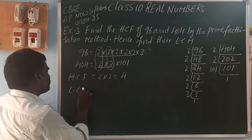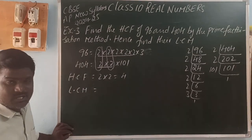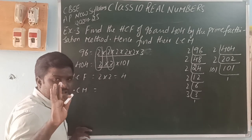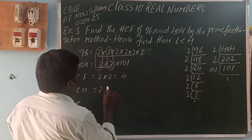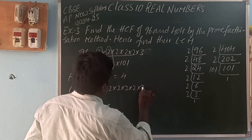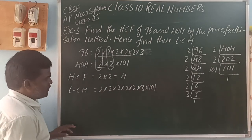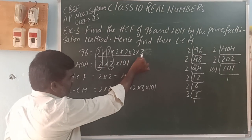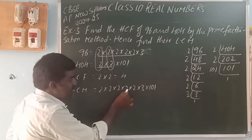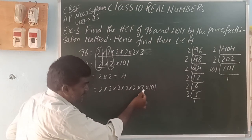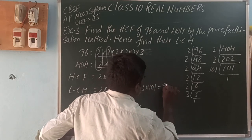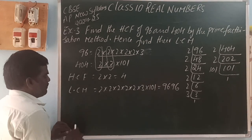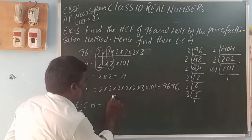For LCM, take the highest multiple of all prime factors. The prime factors are 2, 3, and 1 (i.e., from 404). Factor 2 appears 5 times at maximum, factor 3 appears once. So LCM = 2^5 into 3 into 1 = 32 into 3 = 96. There is another formula: Product of two numbers = HCF × LCM. So LCM = (96 into 404) ÷ 4 = 96. LCM is 96 and HCF is 4.